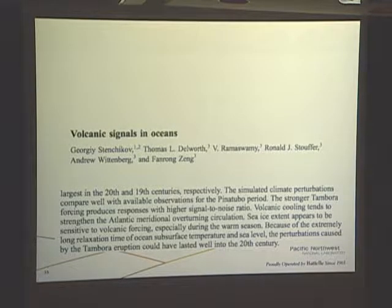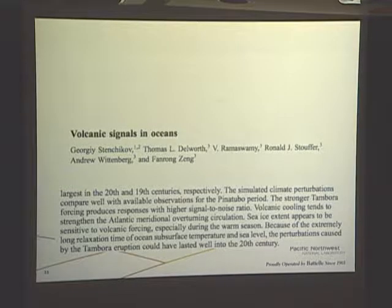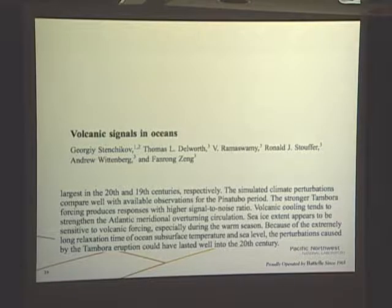Giry Stenchikov has also explored the impact of volcanic signatures in the ocean — volcanic cooling is tending to strengthen the meridional overturning circulation. Our geoengineering simulations with boundary layer cloud seeding do the same thing: doubling CO2 tends to weaken the overturning circulation, and in this case geoengineering is tending to strengthen it as well.